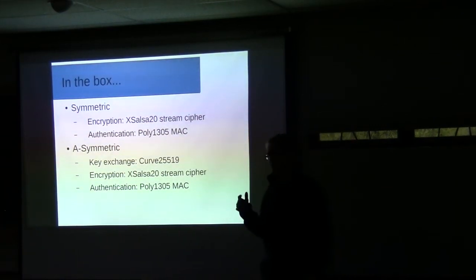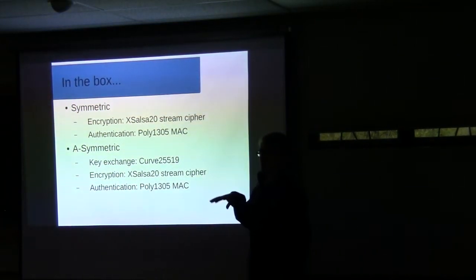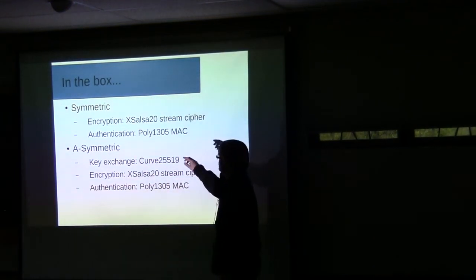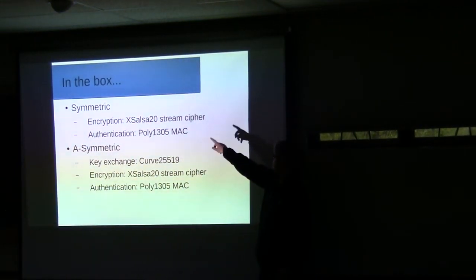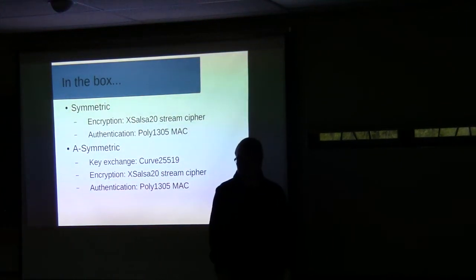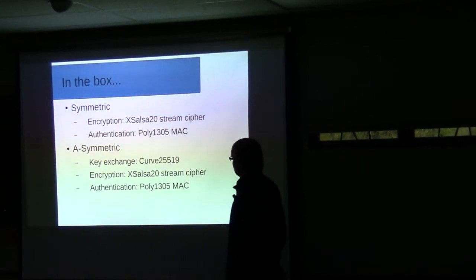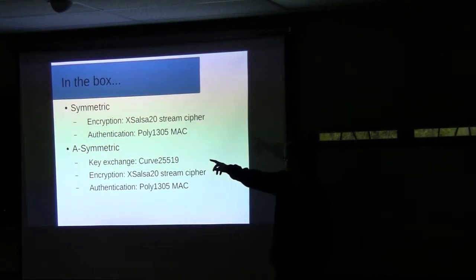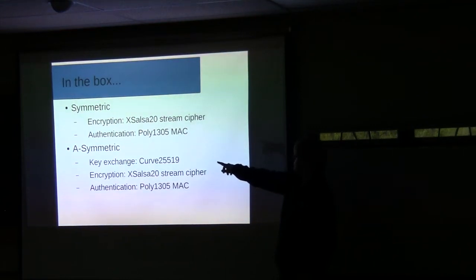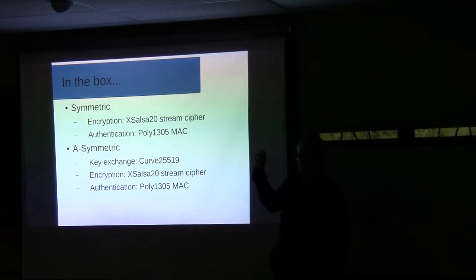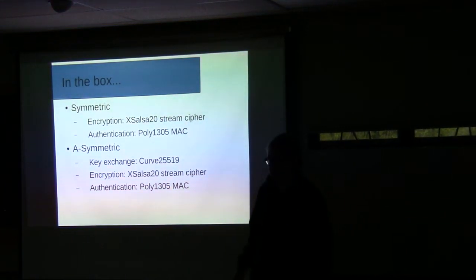Internally, the symmetric crypto box version uses the stream cipher XSalsa20 and authentication via Poly1305. For the asymmetric version, a curve is used for the key exchange — the same curve often used in Diffie-Hellman — so the key exchange is done in a curve-based manner.